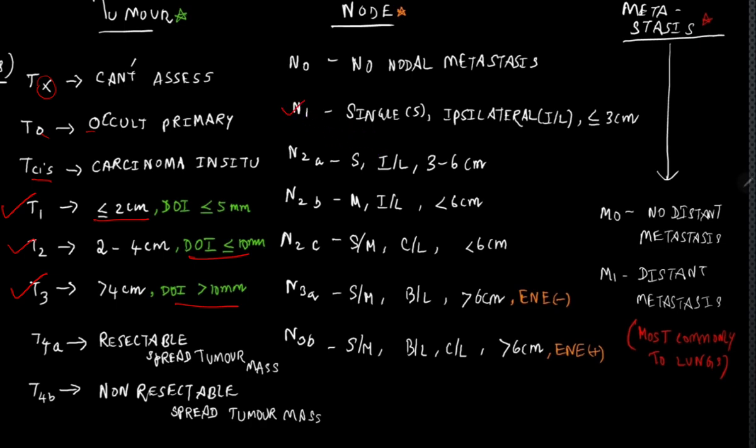In N1, it is single, ipsilateral, and less than or equal to 3 cm. N2 A, 2 is divided into A, B, and C. N2 A is single, ipsilateral, but it is 3 to 6 cm. N2 B is multiple, ipsilateral, but less than 6 cm.